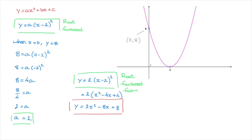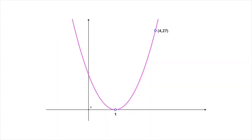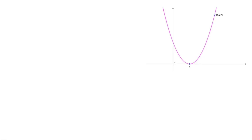Let's look at another example in which the point we're given isn't the y-intercept — instead, it'll be some other point along the curve. Here we have a parabola that crosses the x-axis when x equals 1, and it also passes through the point with coordinates (4, 27). We need to find this parabola's equation. Since this is a parabola, it must have an equation y equals ax squared plus bx plus c, so we need to find the values of a, b, and c.